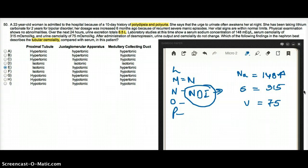But the question is saying, which of the following findings in the nephron best describes the tubular osmolarity compared with the serum in this patient? So they want us to compare tubular osmolarity with serum osmolarity. So first, let's look at how it will be in a normal patient, and then we're going to look at the pathology.